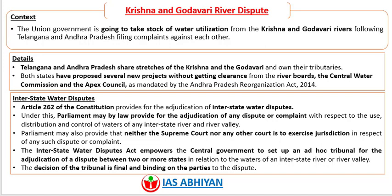The Interstate Water Disputes Act empowers the central government to set up an ad hoc tribunal for the adjudication of a dispute between two or more states in relation to the waters of an interstate river or river valley. The decision of the tribunal is final and binding on the parties to the dispute.